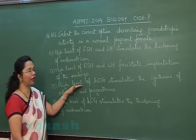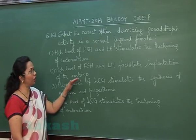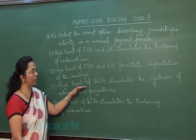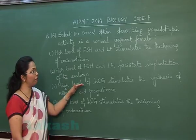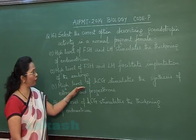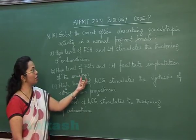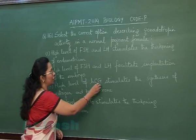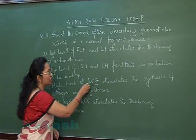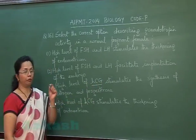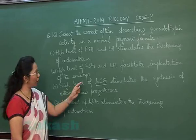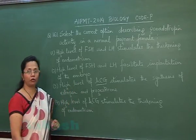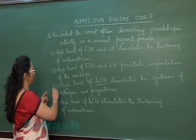The third option states that high levels of HCG stimulate the synthesis of estrogen and progesterone. This is correct because the growing embryo secretes HCG from its trophoblast cells, and this HCG maintains the corpus luteum so that secretion of estrogen and progesterone can continue.